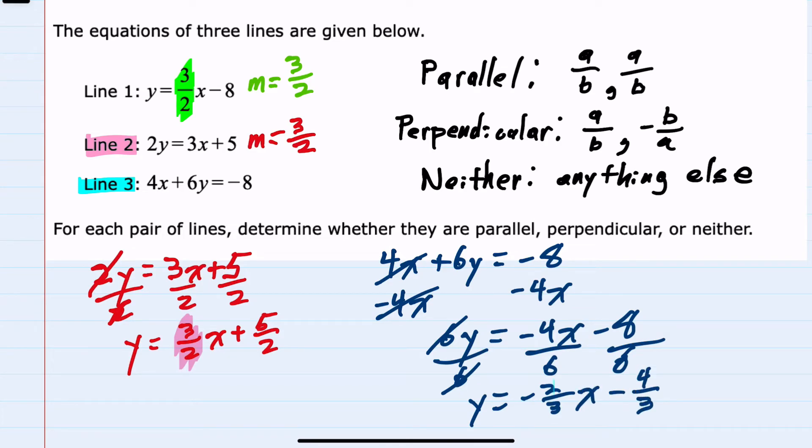And then divide each term by six would give me Y equals negative 2 thirds X minus 4 thirds. The important bit here though is the slope, the number in front of the X, which here is negative 2 thirds.